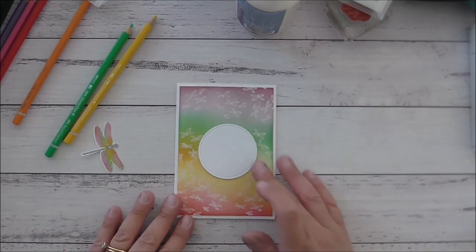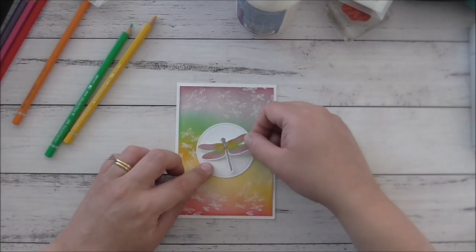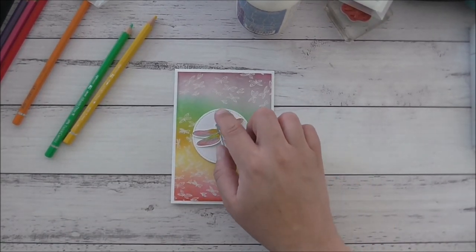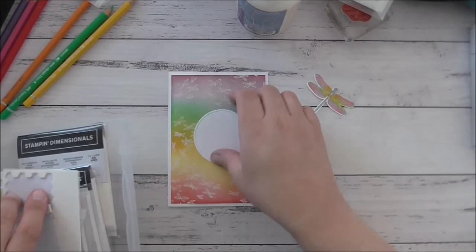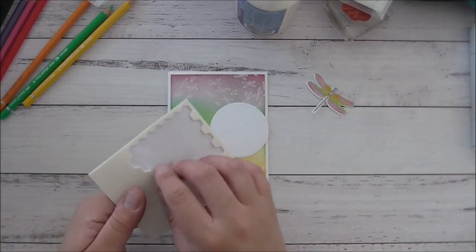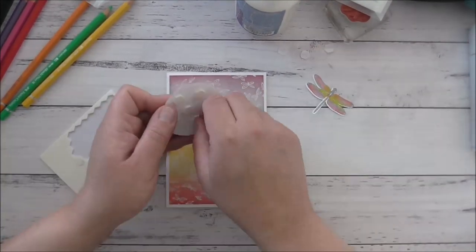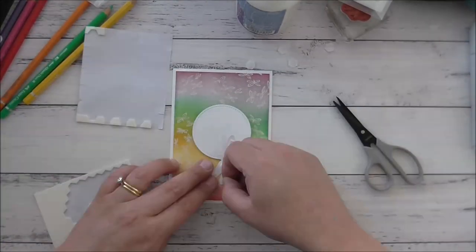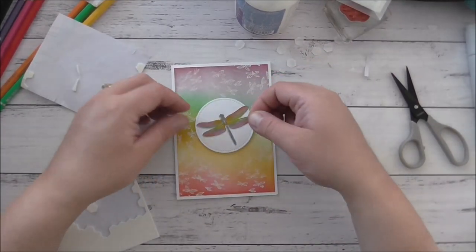So with this one I'm going to add this in the middle of there, and then I'll add my dragonfly like so, and I think that turned out okay. So what I will do with the circle there is I'm going to use some dimensionals, and I'm going to pop the circle up on dimensionals, and I will also use dimensionals for the dragonfly as well so that will have a little bit of dimension.